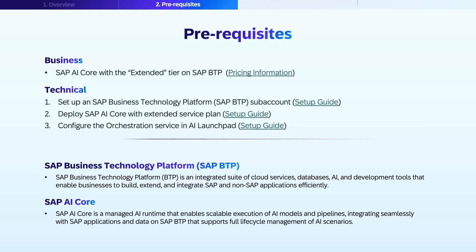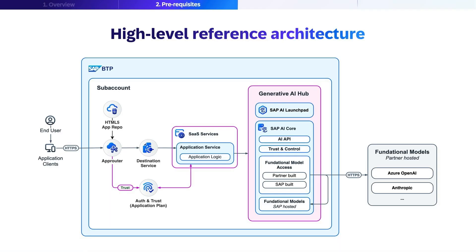SAP AI Core orchestration service enables usage of features such as data masking, content filtering, and prompt templating. The service is part of SAP AI Core and requires an extended service plan. By setting up these prerequisites, you'll establish a strong foundation for implementing AI projects successfully and at scale.